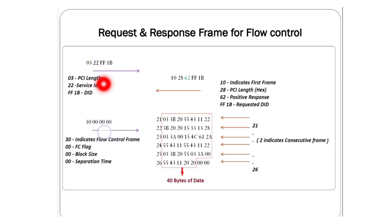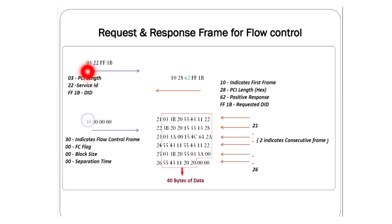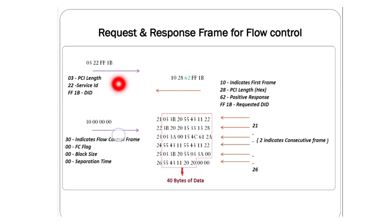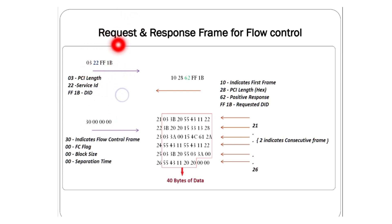In the reverse way — if you want to write more than 8 bytes of data as a tester — the process is similar. Instead of service 22, you use 2E (Write Data By Identifier) with the same data identifier FF1B. To write multi-frame data, instead of a single frame prefix 00, you write 10 28 2E FF 1B — that is the first frame with PCI length.